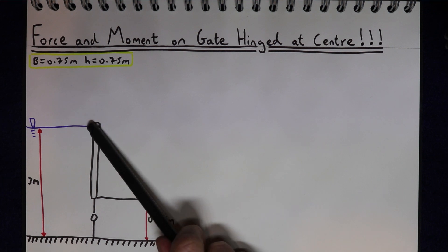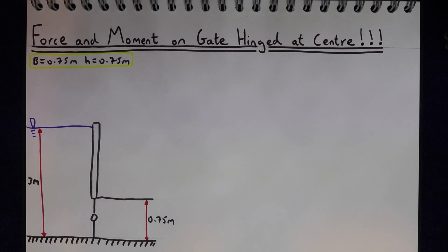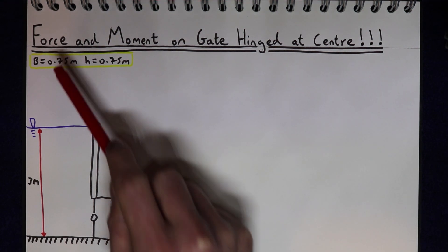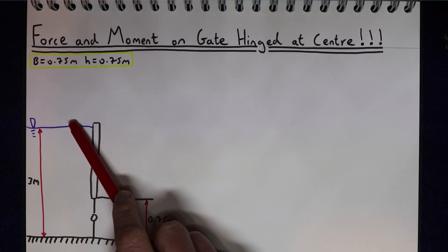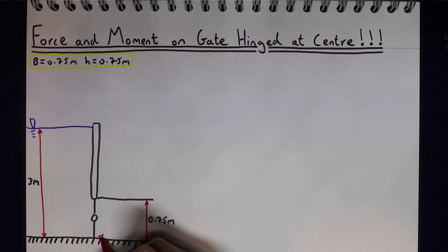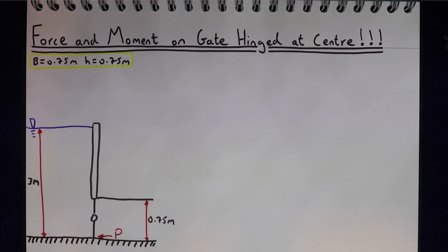In this problem we've got a reservoir filled to 3 metres and we've got a gate retaining the water from an outlet channel. The gate is 0.75 metres high and 0.75 metres wide and the depth of water in the reservoir is 3 metres. What we're asking is what force P do we need to apply to the base of this gate to keep it shut at this water level?